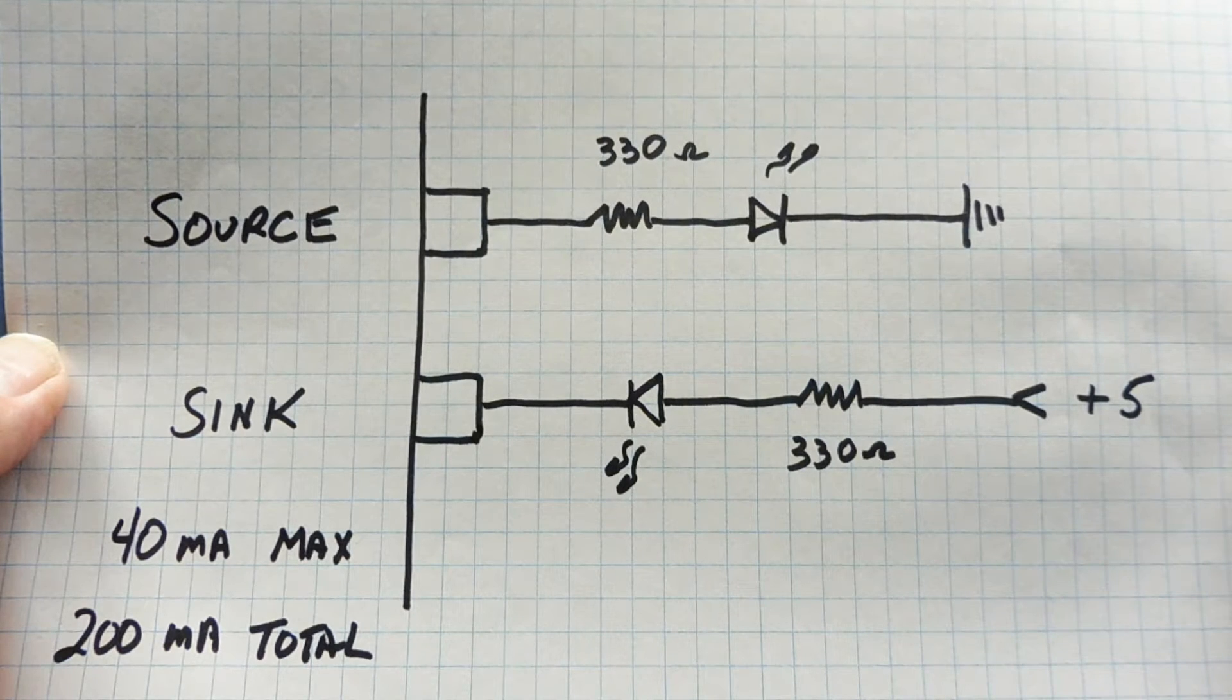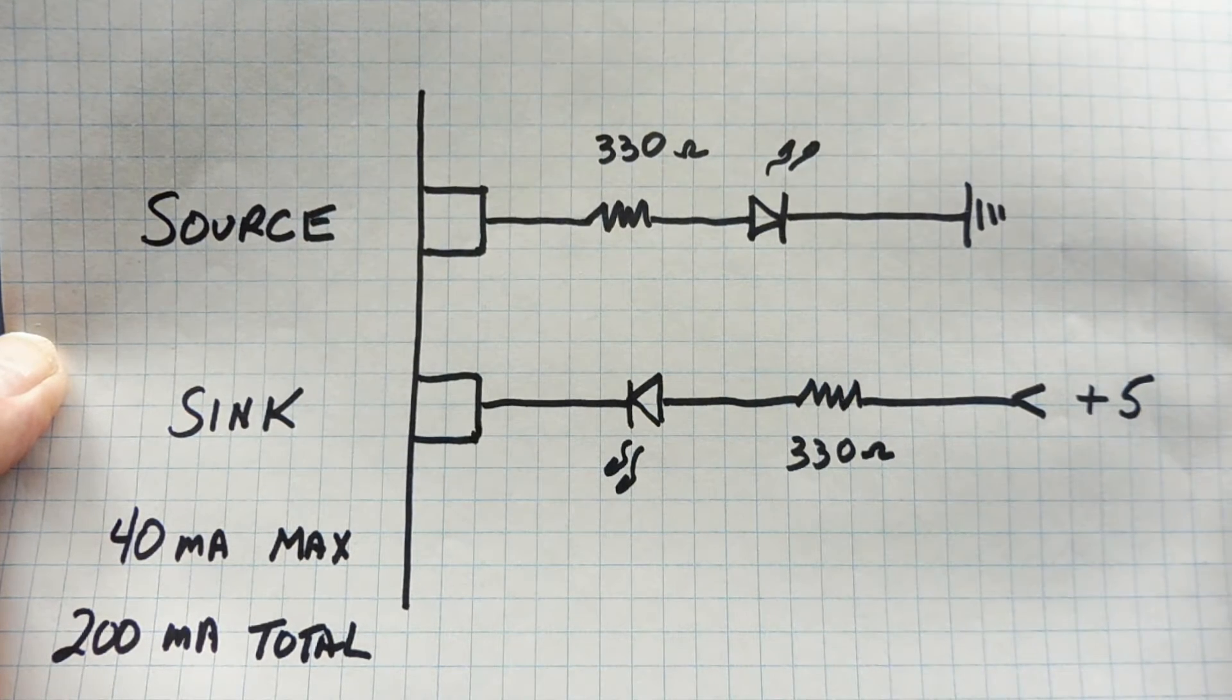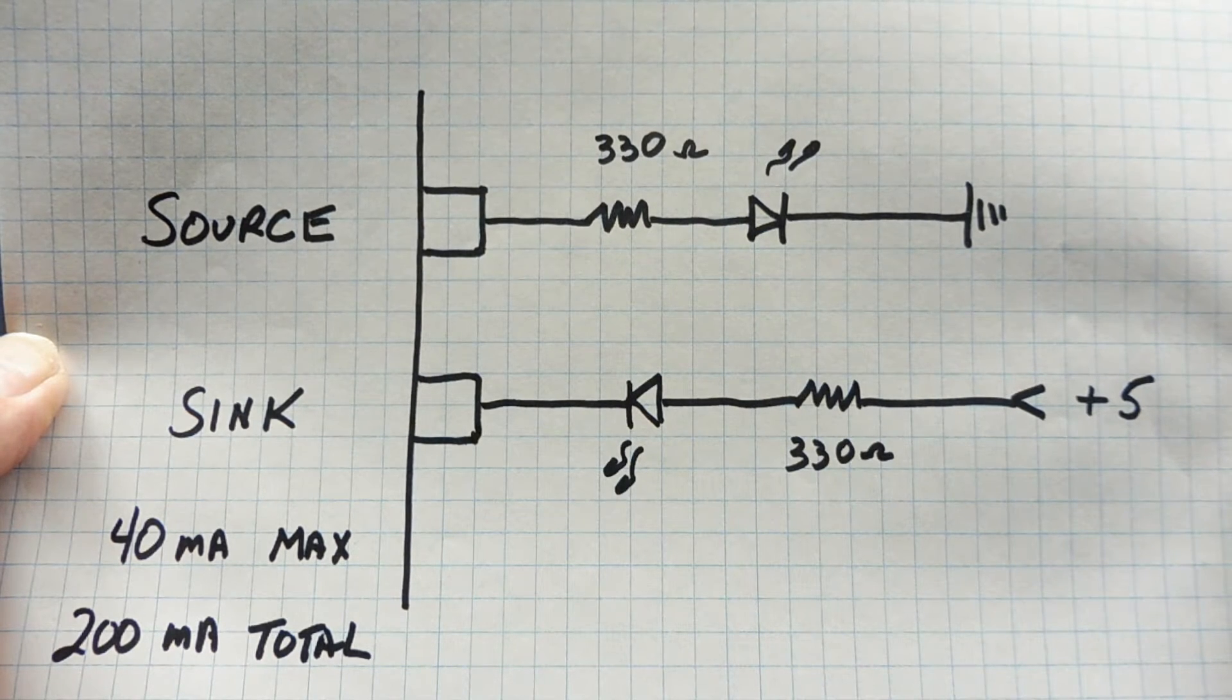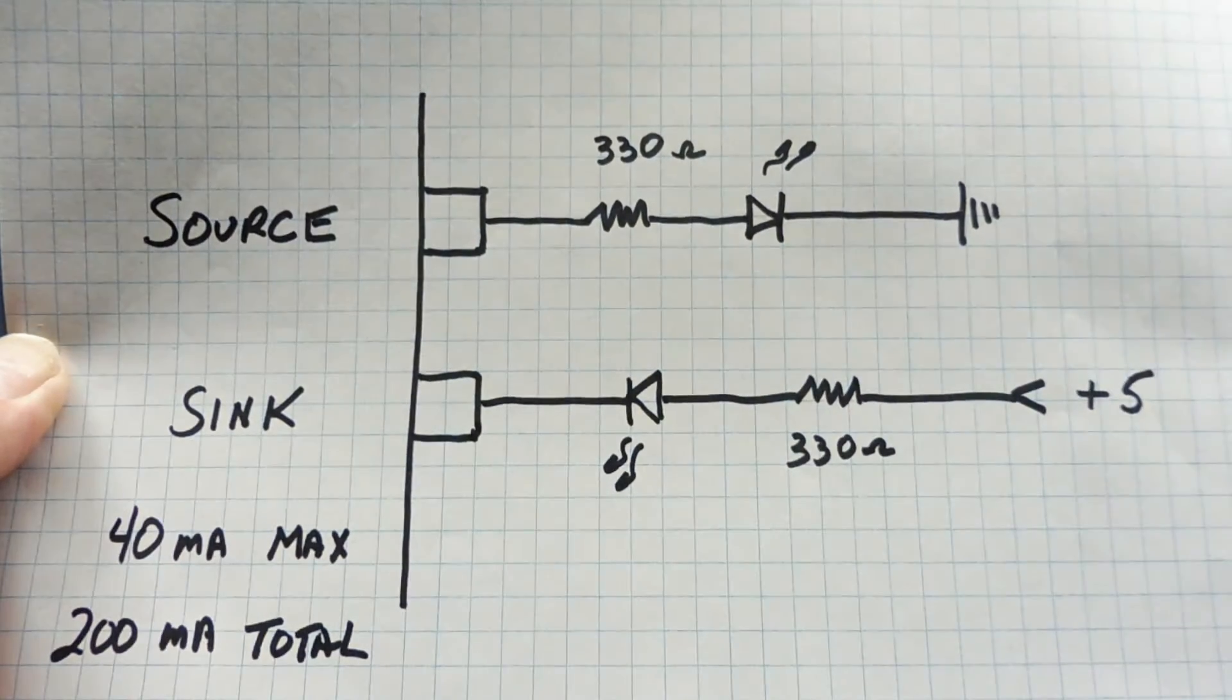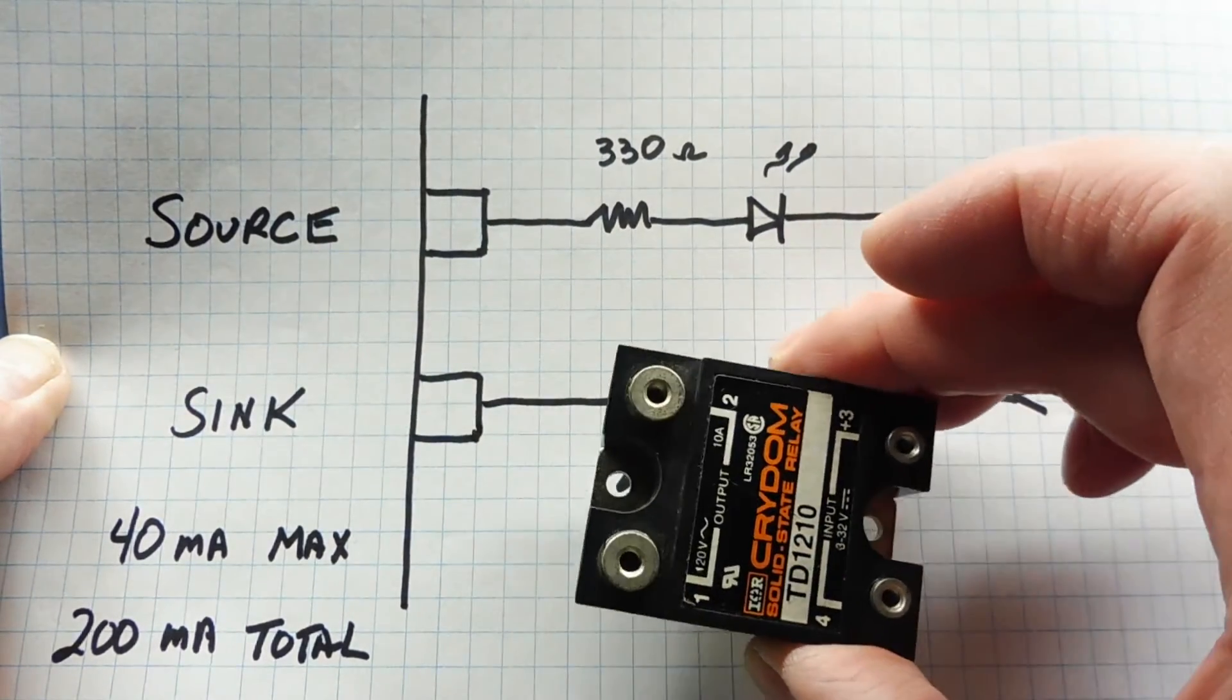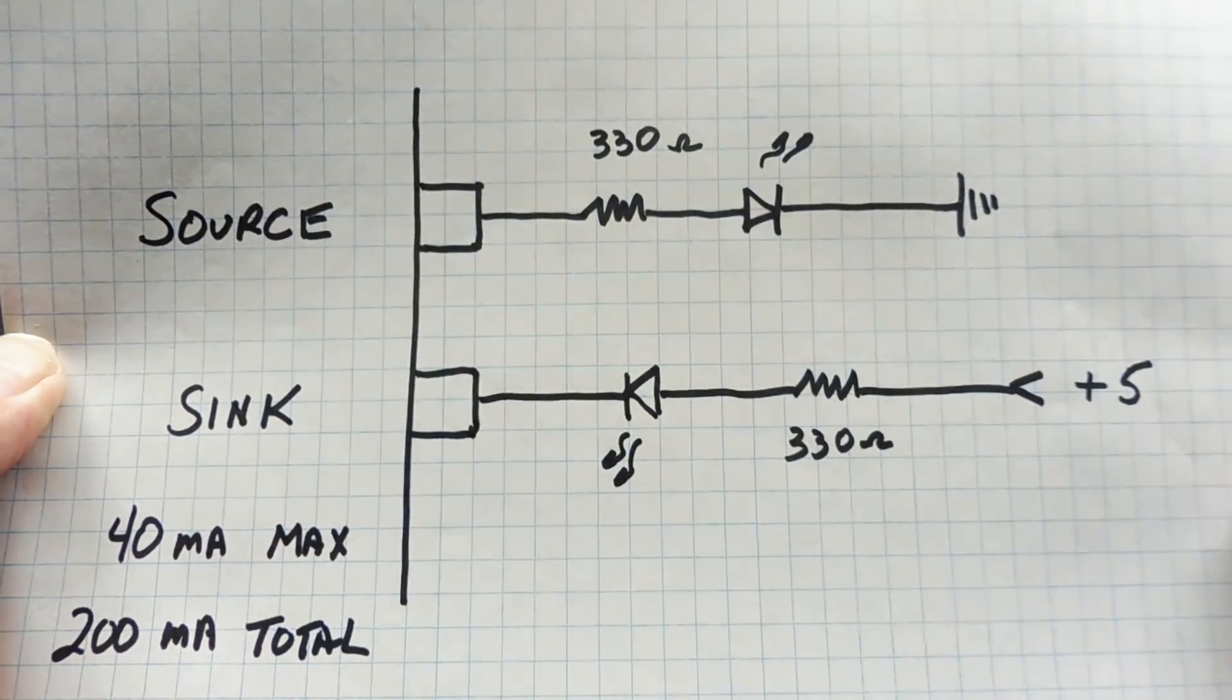If you want to control a device in the outside world that takes more current and voltage than a GPIO pin can supply, then you need some kind of buffer, some kind of interface, that will take a small current and enable a bigger current. Something like a transistor, a relay, or a solid state relay. We'll be looking at some components and schematics that will enable us to do that.